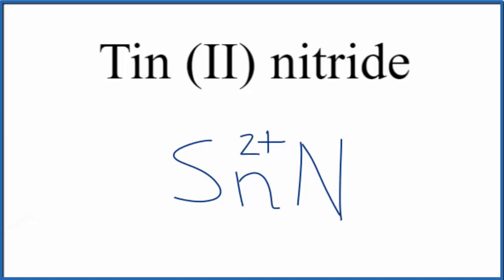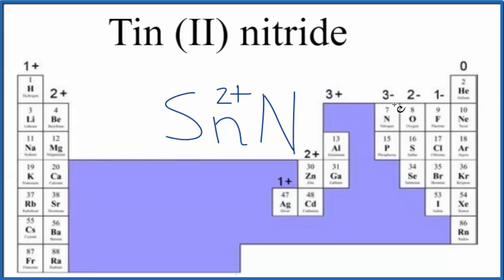For the nitrogen, let's look that up. We find nitrogen right here. And along with phosphorus, these are 3-. So we'll put our 3- in here.